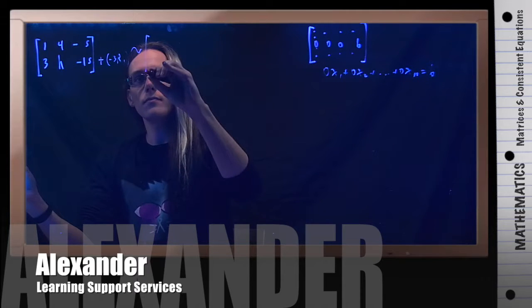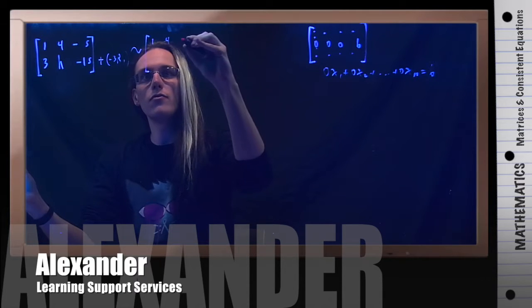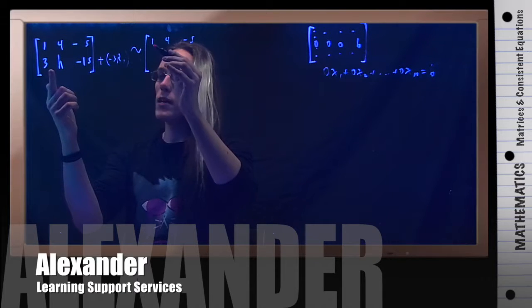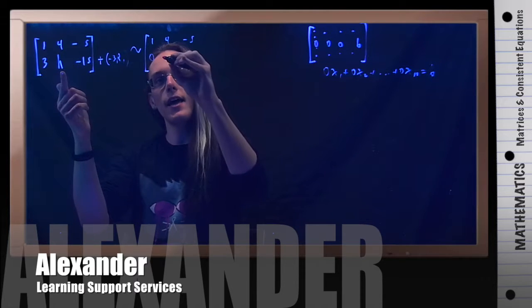So leaving the top alone, I have 1, 4, negative 5. Negative 3 times 1 is negative 3, plus 3 is 0. Negative 3 times 4 is negative 12, and when I add that to h, I get h minus 12.